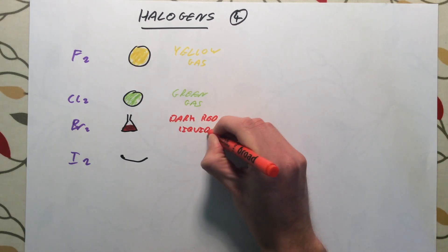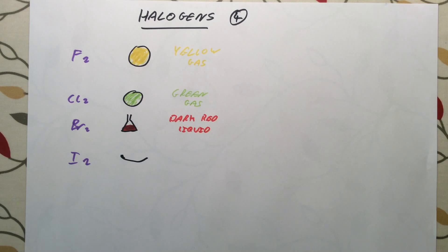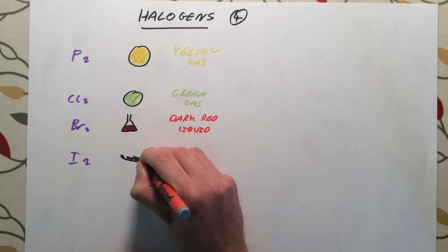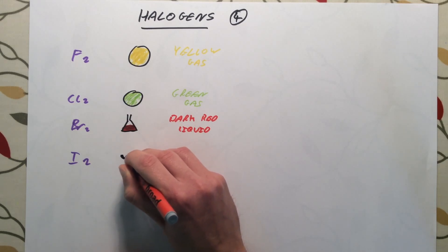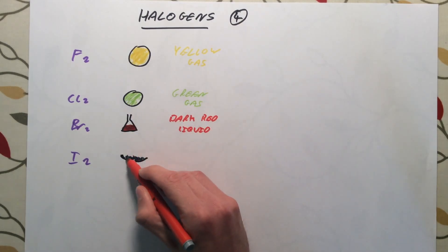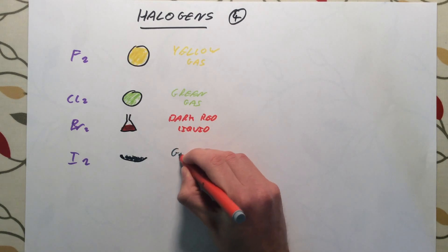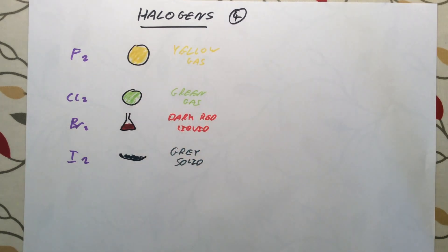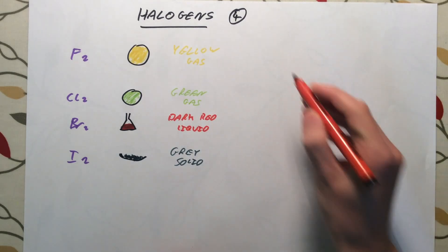Iodine is a solid at room temperature — it appears as gray crystals. When you heat iodine, it actually evaporates directly into a really nice purple gas, but at room temperature it is a gray solid. That covers the appearances. We also need to know a bit about the reactions of these halogens.